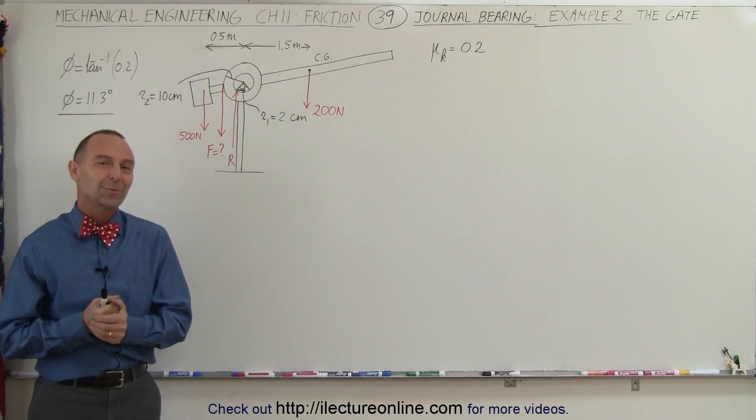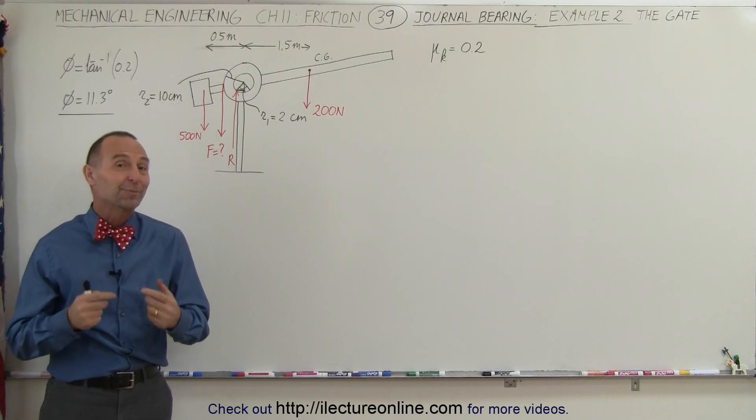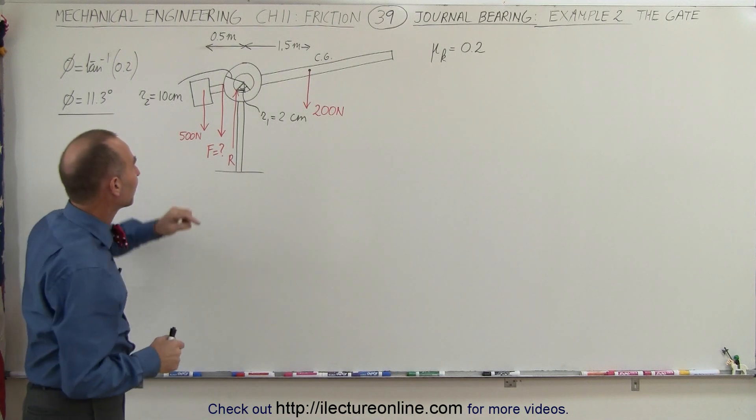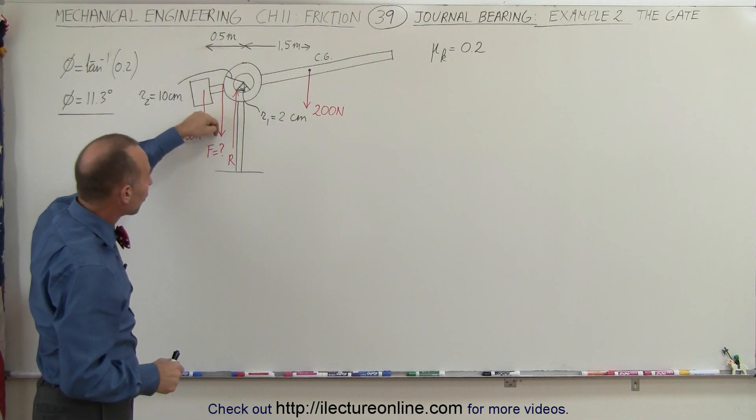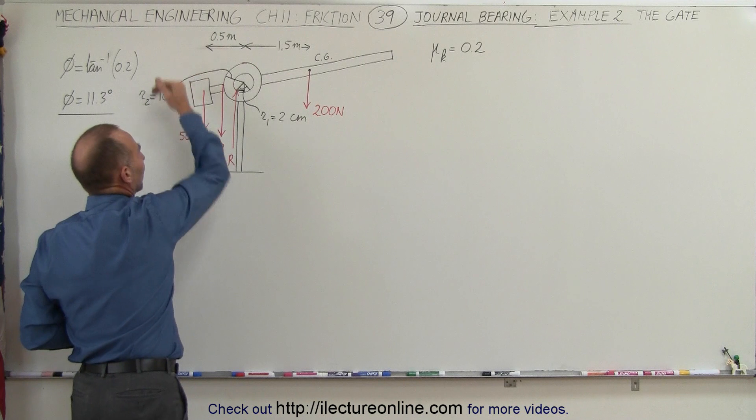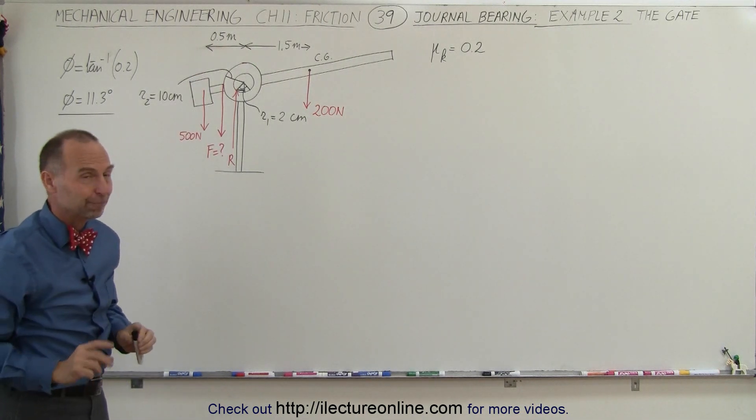Welcome to ElectronLine. Here we have a problem that is very similar to the previous one, with one big difference: we're now pulling downward to open up the gate instead of sideways, and it does make a difference. Let's see why.